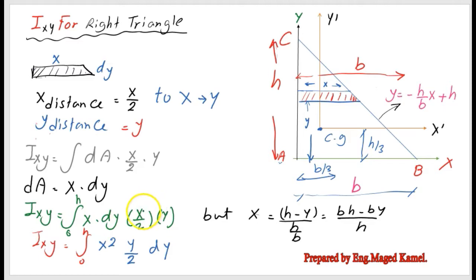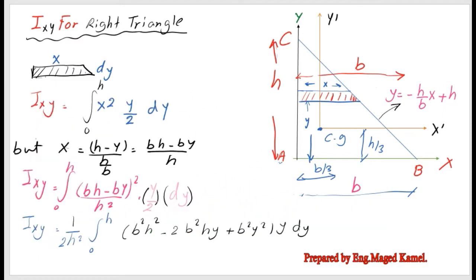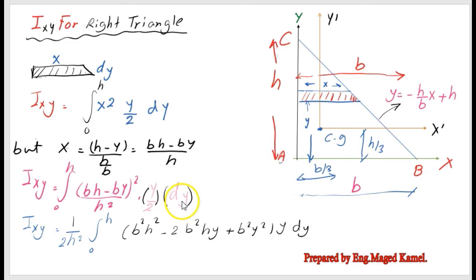The integrand becomes x²/2·y·dy. Introducing the relation x = b(h - y)/h, we have Ixy equal to the integration from 0 to h of [b(h - y)/h]² multiplied by y/2·dy. Expanding, x² equals b²(h - y)²/h².